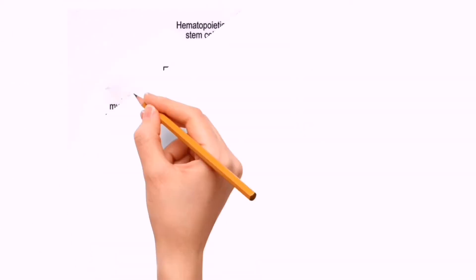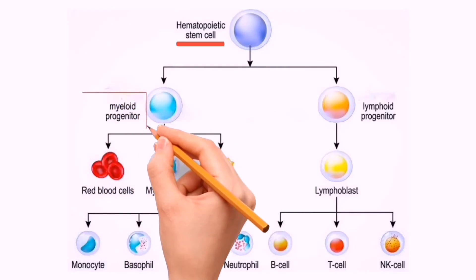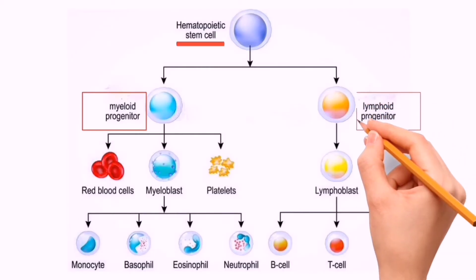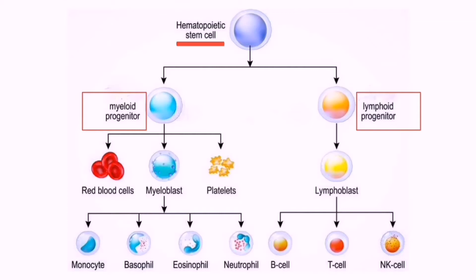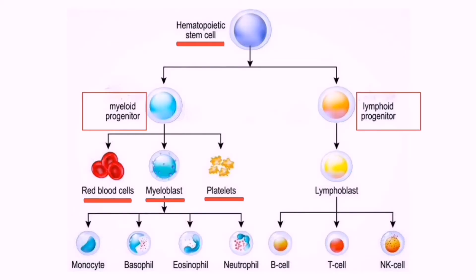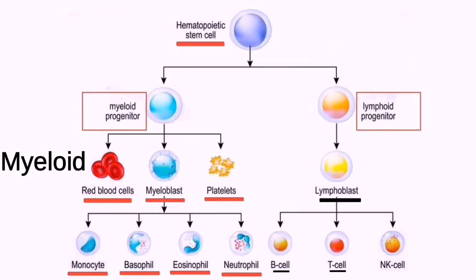Normally, the hematopoietic cascade — the hematopoietic stem cell — gives rise to two types of cells: the myeloid stem cell or myeloid progenitor, and the lymphoid stem cell or lymphoid progenitor. Myeloid progenitor gives rise to red blood cells, myeloblasts, and platelets, while myeloblasts give rise to neutrophils, eosinophils, basophils, and monoblasts. Lymphoblasts give rise to T cells and B cells. In myeloid leukemia, there is uncontrolled production of cells of myeloid lineage, while in lymphoid leukemia, there is uncontrolled production of lymphoid lineage.